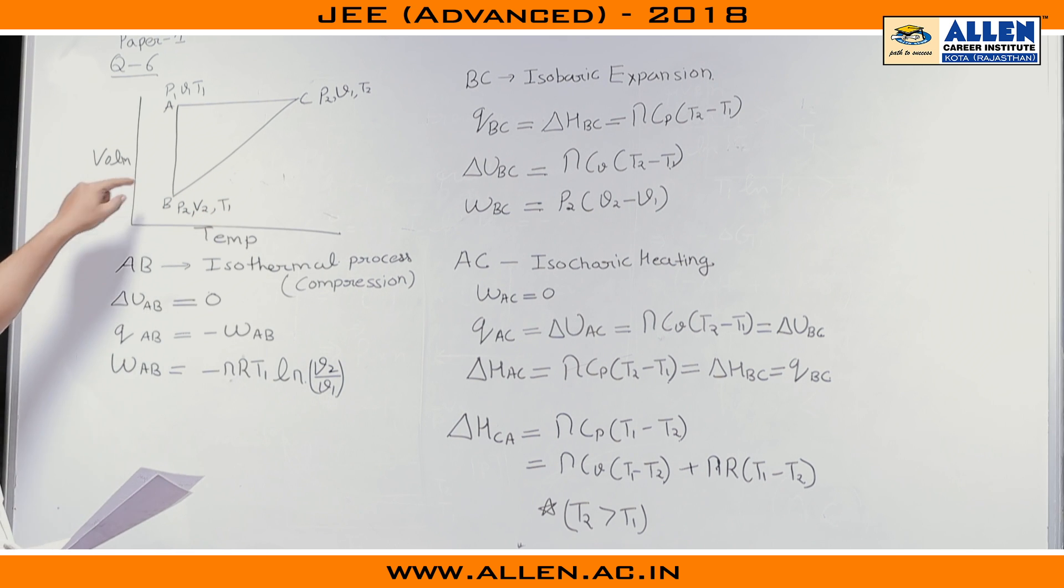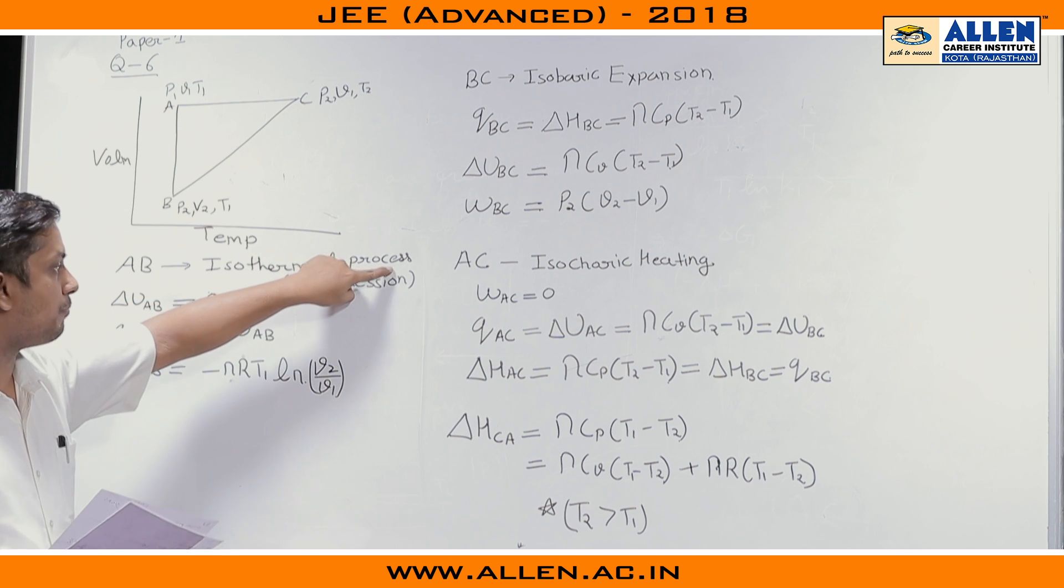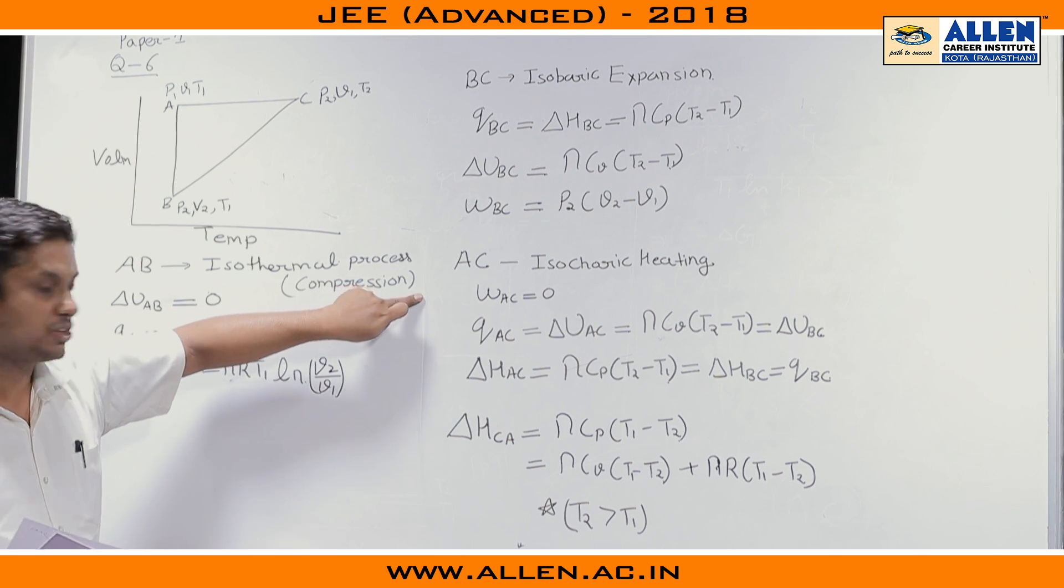Now we can check that from the graph A, B has its temperature constant. So A, B process is isothermal process. From A to B if we see then volume is decreasing, hence we can say that the process is isothermal compression.